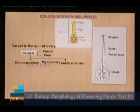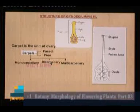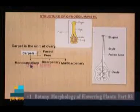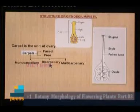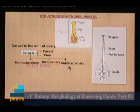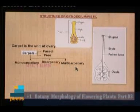The carpel is the unit of the gynoecium and the number of carpels varies. If the ovary is made up of one carpel, it is called monocarpellary. If made up of two carpels, bicarpellary. If made up of more than two carpels, it is called multicarpellary or polycarpellary ovary.